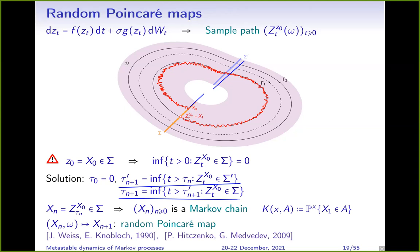This now defines my random Poincaré map. I have x_n, which is the position at the n-th return time to sigma. Mathematically speaking, it is a Markov chain with continuous space, with a transition kernel k(x, A) being the probability, starting at x, of returning inside the set A. This is also a function of the starting point and of the randomness. We use the term adapted from a paper by Pavladin, Hitschenko, and Georgi Medvedev. I later found out this concept was already studied by Weiss and Knue in 1990.